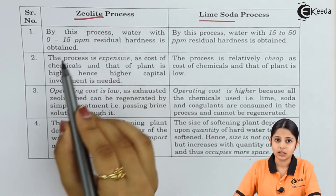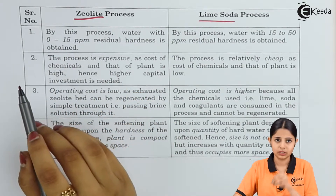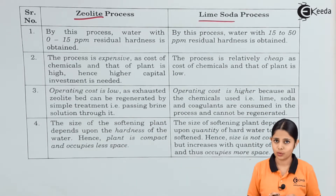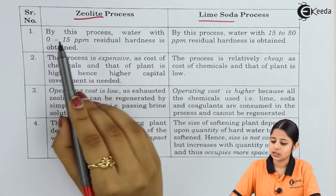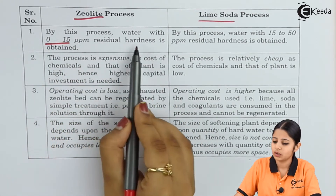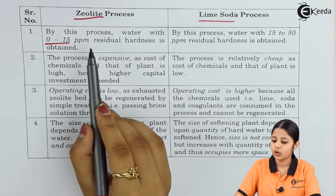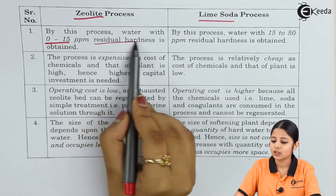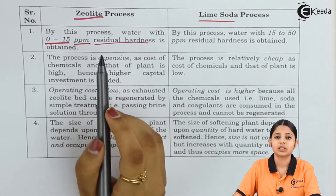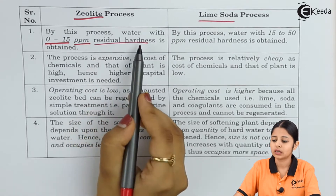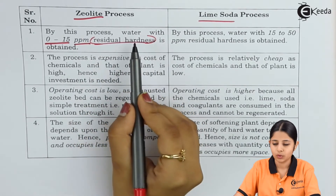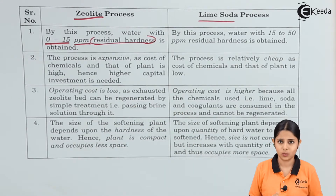In the zeolite process we add zeolite or permutite inside the water. In the lime soda process we add lime and soda. The first comparison point: the zeolite process produces water with 0 to 15 ppm residual hardness. PPM means parts per million, and residual hardness refers to the remaining impurities — the soluble salts still present in the treated water.